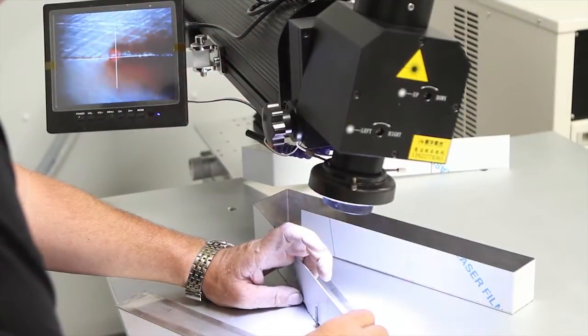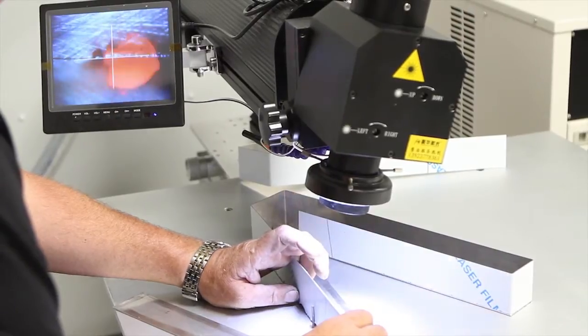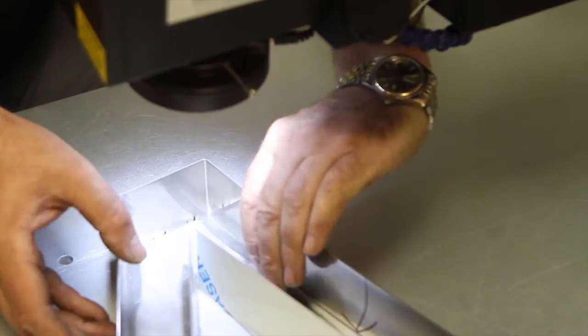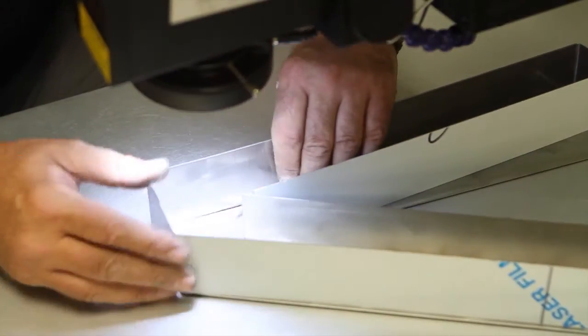The machine is used to laser weld metal letter faces to their returns in a matter of seconds. First we use the laser to tap the two together and then we create a full or intermittent seam.